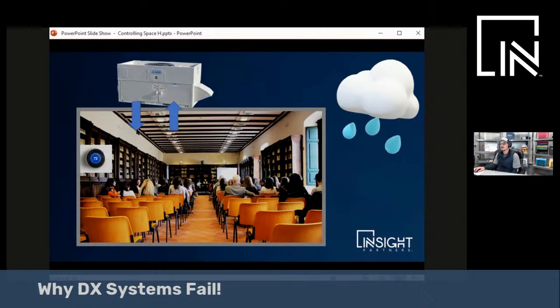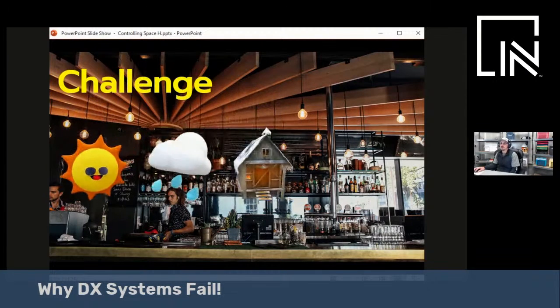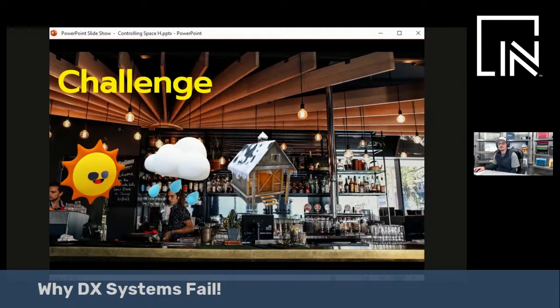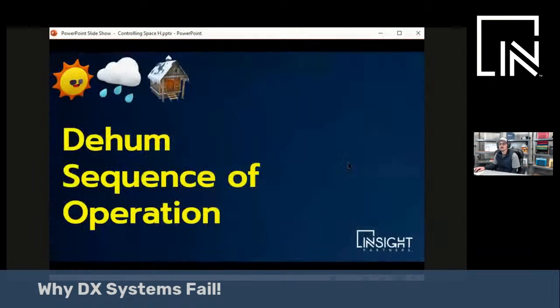The system will shut down, even if you need to dehumidify, because it's only looking at the space temperature. It's not looking at the humidity in the space for standard DX systems. And there's the problem. So the challenge is to design a system that will control temperature and humidity over all load conditions. Normal systems aren't designed to do that.